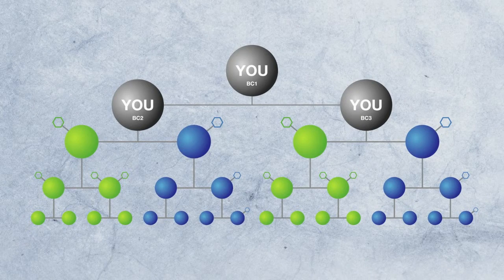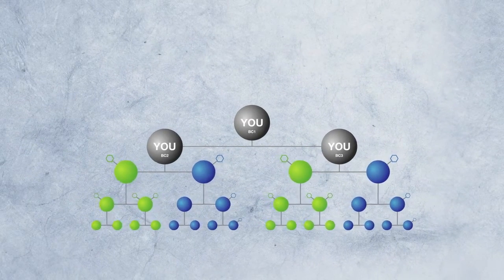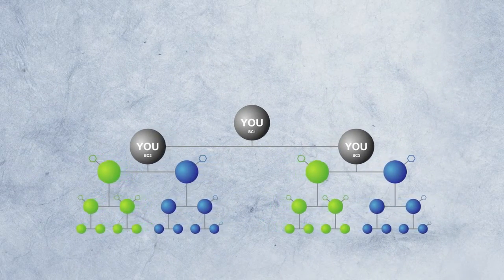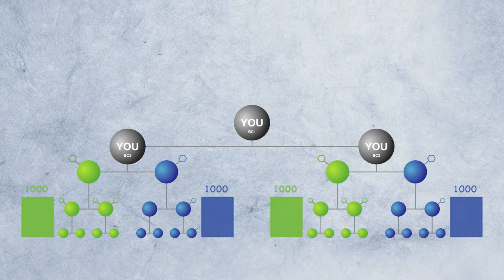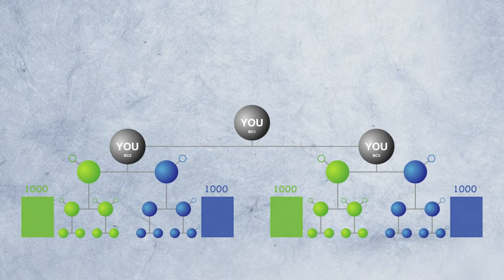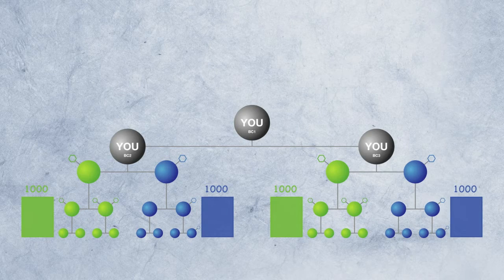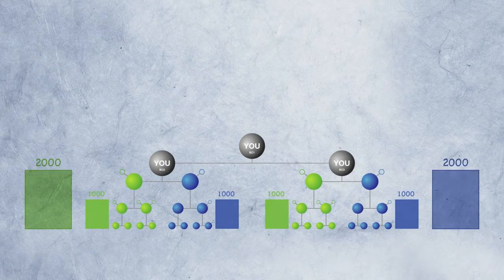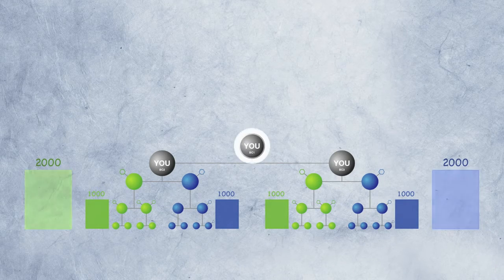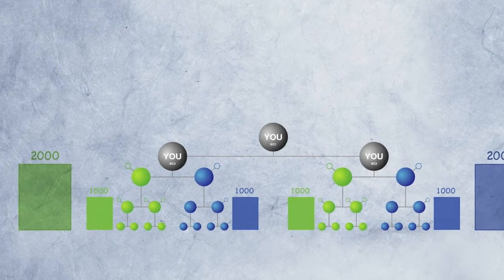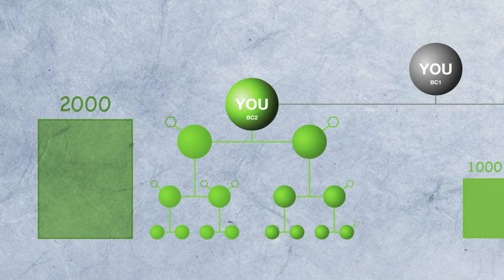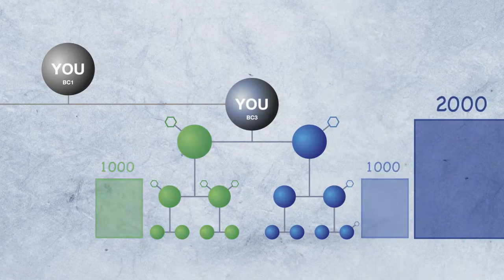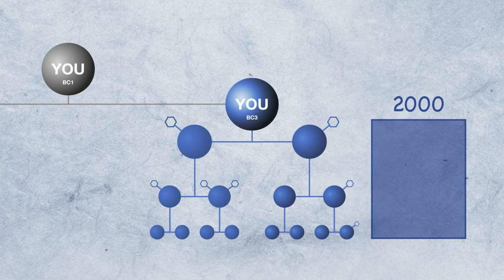For this example, we'll use nice even numbers to keep the math easy. So let's say both sides of BC2 and BC3 each generate 1,000 sales volume points. You'd also have 2,000 left and 2,000 right on your BC1. Why? Because everything under BC2 is on the left side of BC1, and everything under BC3 is on the right of BC1.